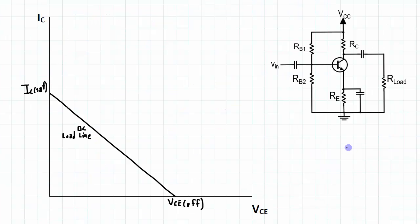I've redrawn a representation of the DC load line here again, with IC sat at the saturation current and VCE off at the cutoff point. Again, these are representing the DC values for the combinations of IC and VCE.